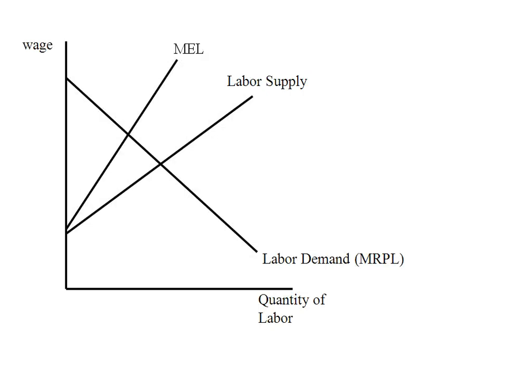A monopsonist, remember, is a single purchaser of an input. Here's a typical graph of a monopsonist. We've got a downward sloping labor demand, which comes from the marginal revenue product of labor — it's kind of like the value of the worker to the firm. Labor supply slopes up, coming from individuals; as the wage goes up they supply more labor. MEL stands for the marginal expenditure on labor, which is basically the cost of the worker to the firm.